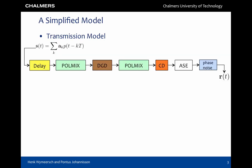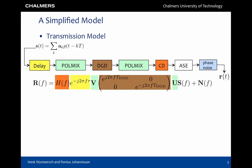Our communication model involves a number of typical impairments. The transmitted dual polarization signal is delayed, the polarizations are scrambled, differential group delay is applied, and finally the signal is subjected to chromatic dispersion. At the receiver side amplified spontaneous emission noise is added alongside with phase noise. The received signal in the frequency domain, ignoring the phase noise, is written as shown, where the different colors show the different impairments.